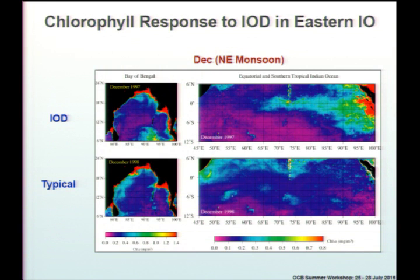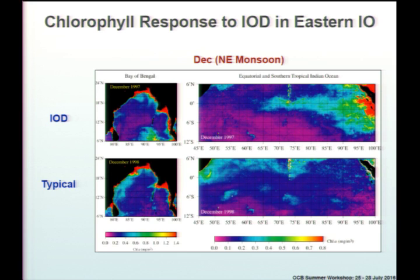In the 97-98 IOD event, you get this really strong upwelled water extending basically halfway across the basin, with a signature also in the southeast Bay of Bengal. The more typical pattern is oligotrophic everywhere. As Mike talked about, the tuna fishery swung all the way over to the east during this time because that's where the forage was and where the tuna were setting up.